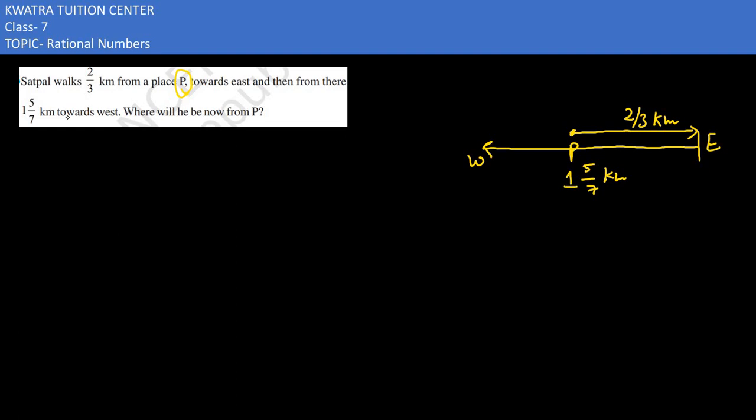Now they are saying where will he be now from P. That means we need to find the distance from W and P. How would you do that?